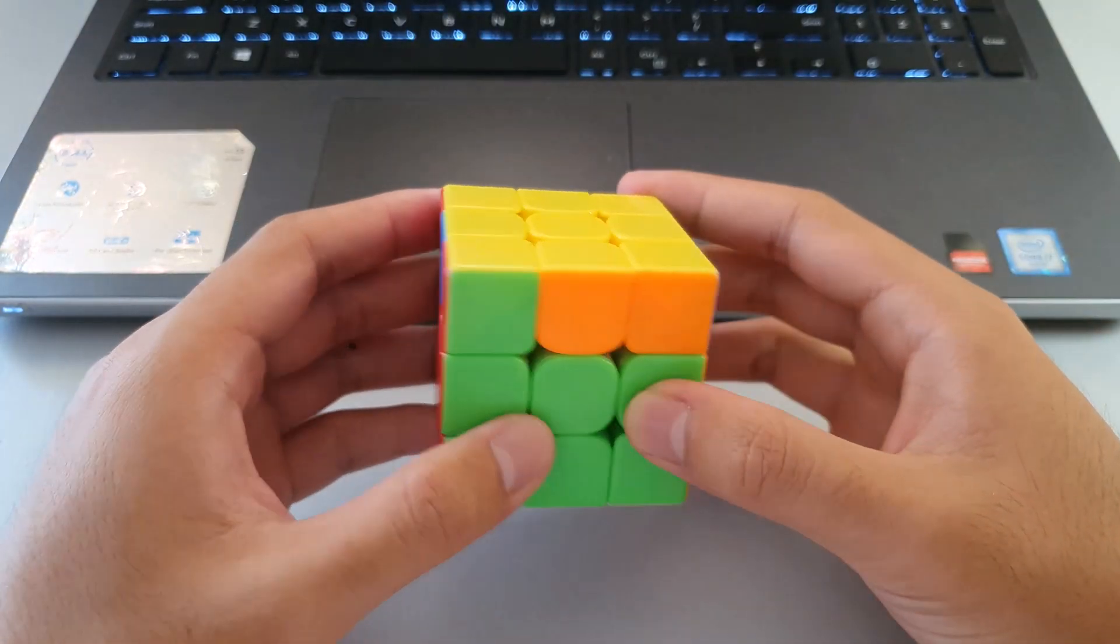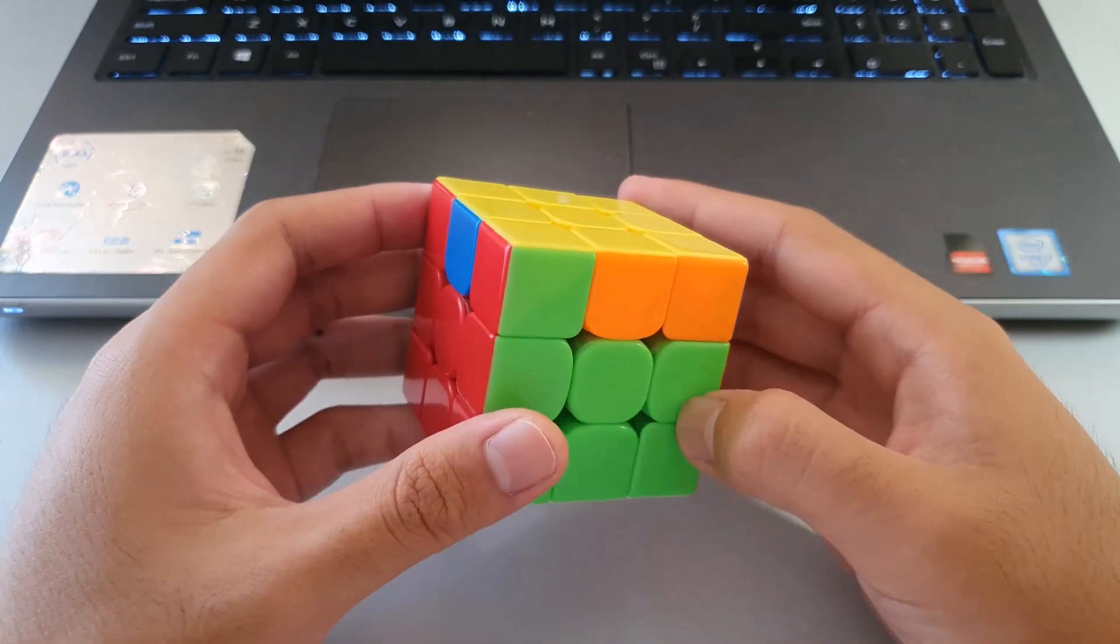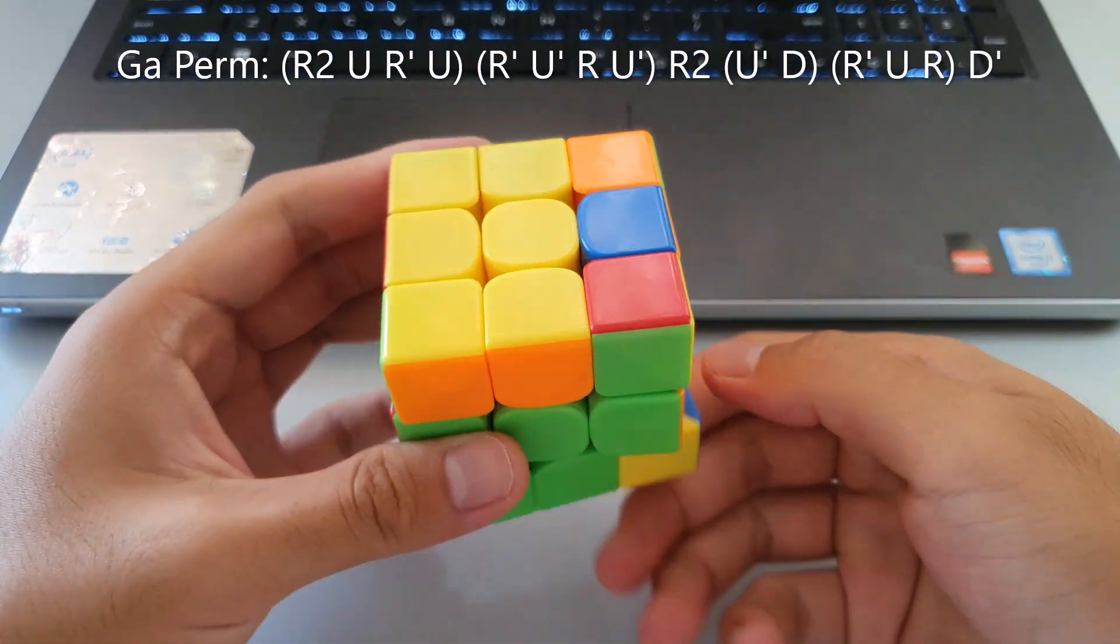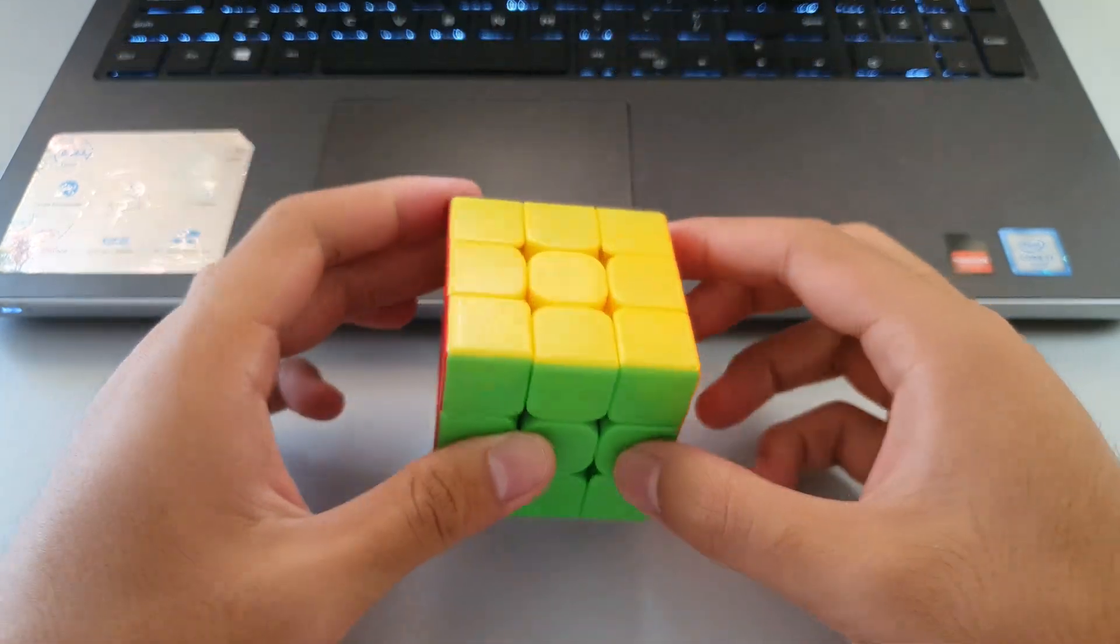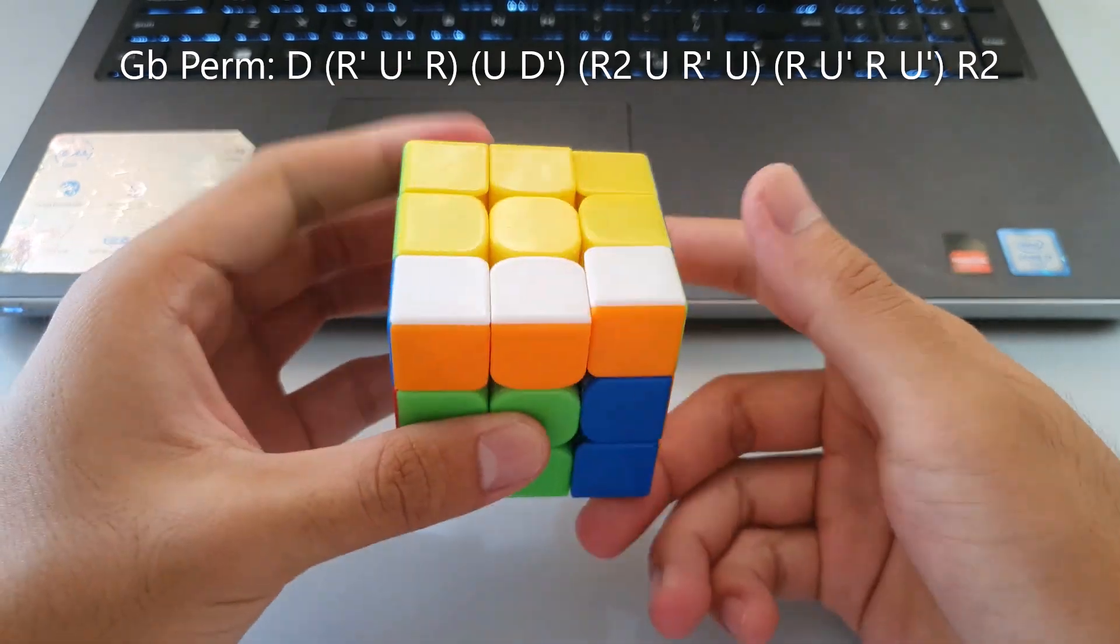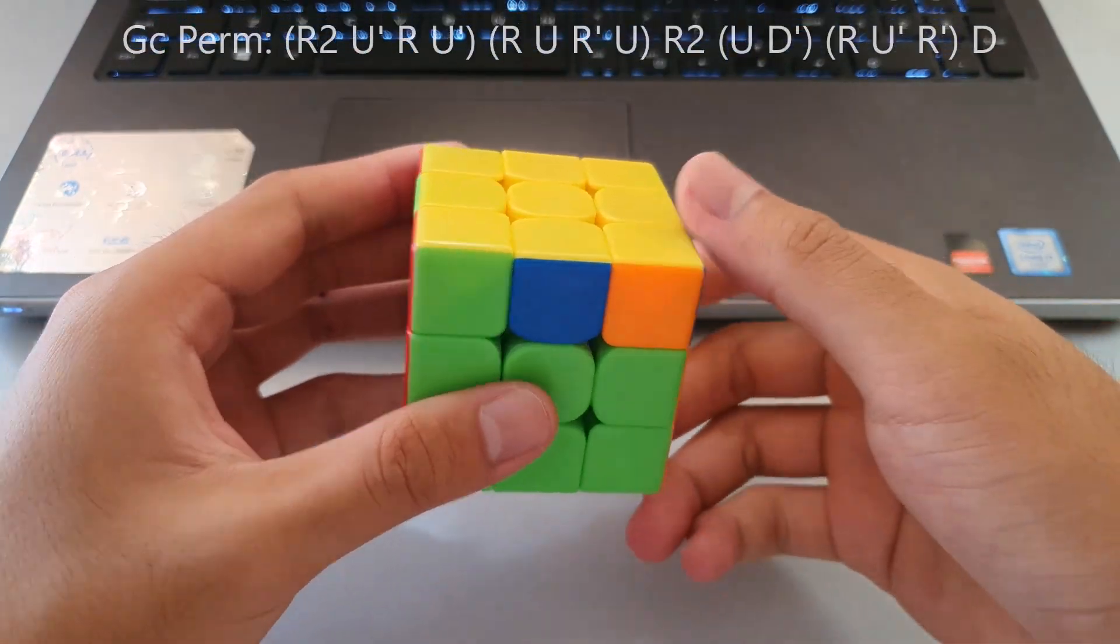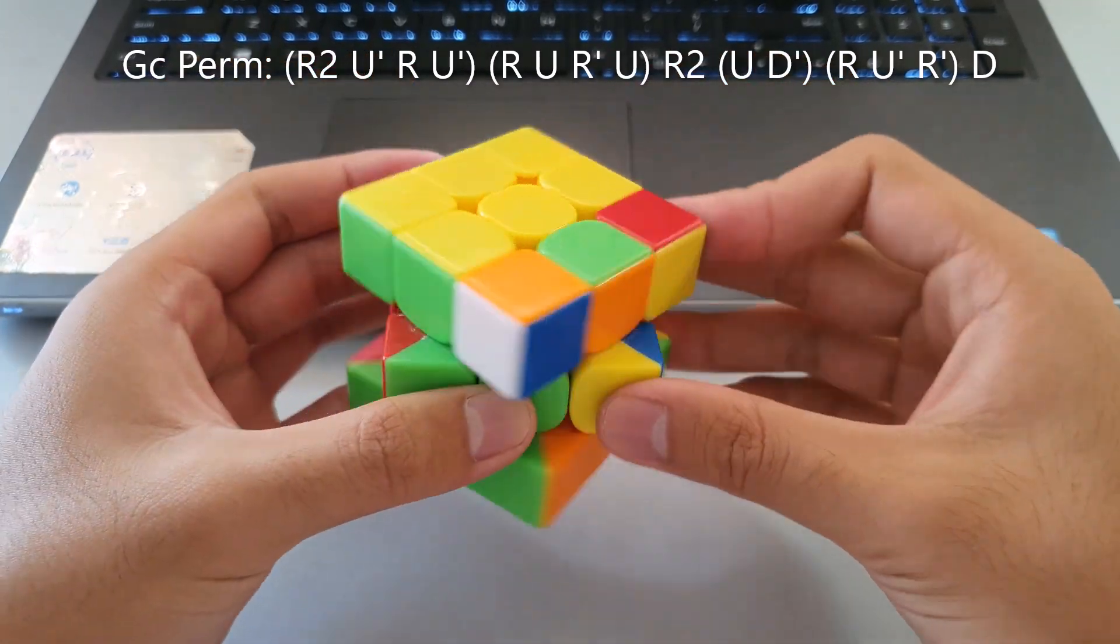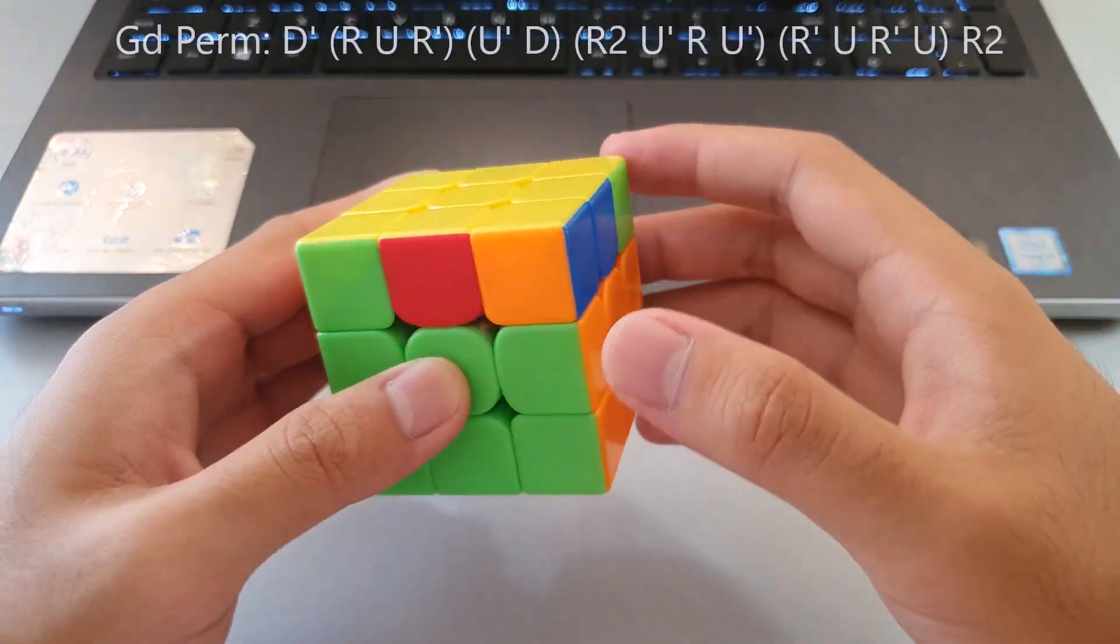Speaking of algorithms, here are the algorithms for the G perm. This is the GA perm. This is the GB perm. This is the GC perm. Finally, the GD perm.